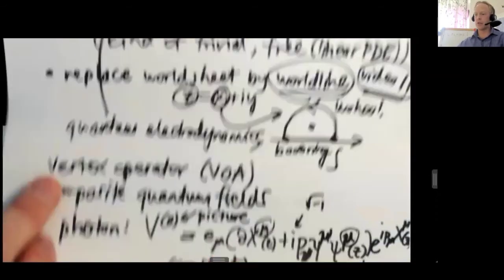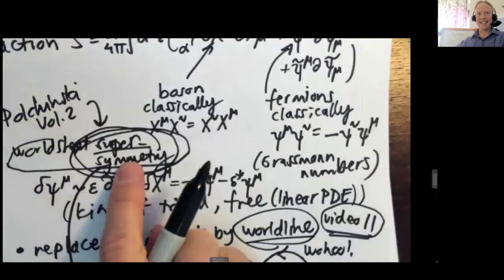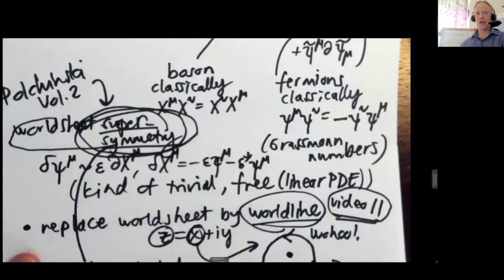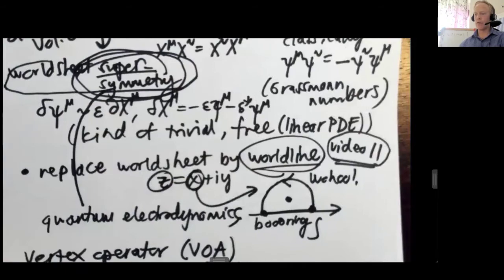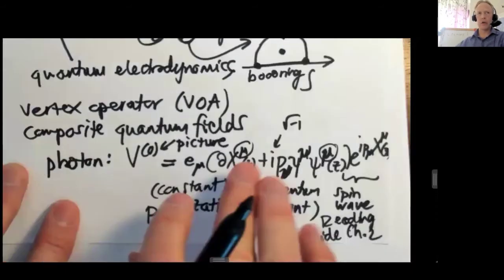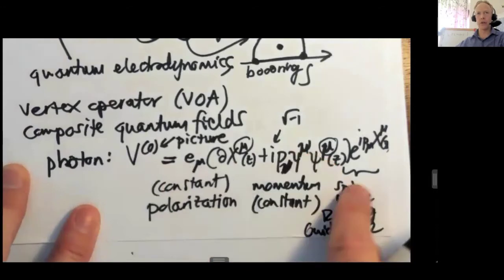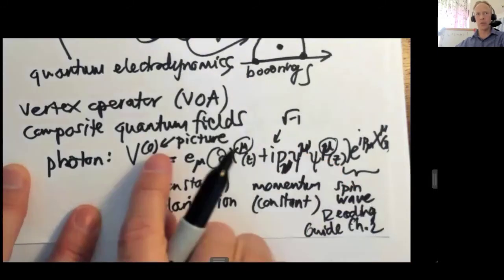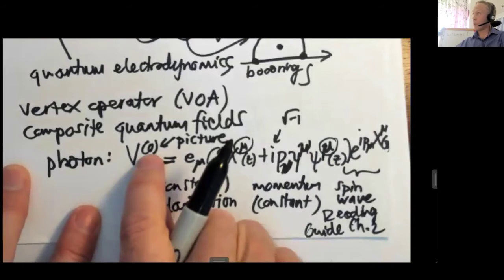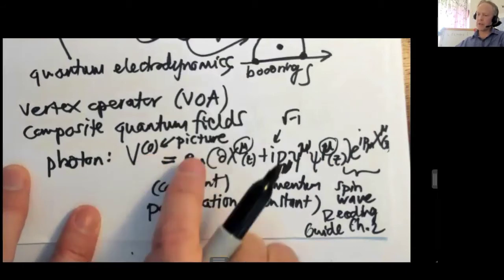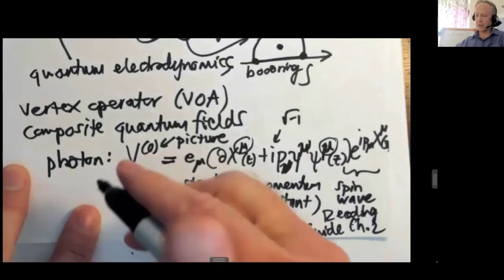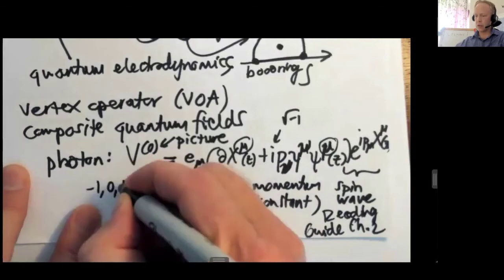So that was the picture. Because of this symmetry, worksheet supersymmetry, there's an infinite degeneracy in how you represent a photon, for example. So a photon can be represented in an infinite number of ways by acting with worksheet supersymmetry on this vertex operator. So this is just one possible representative. It turns out to be one that will be the most central to us. But there's an infinite number of other pictures that are minus 1, 0, plus 1, and so on.